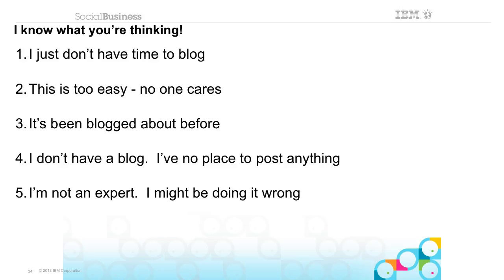Number two — this is too easy, no one cares. If it took you five minutes to figure something out, it's going to take me ten minutes. Share that information, help somebody. There is nothing that is too easy. Number three — it's been blogged about before. That doesn't mean you can't blog about it or do a show on it. The more blogs there are, the more postings about a topic, the better chances someone will actually find it and learn from it. Blog about it again — link back to the original source if you like, but don't be afraid to redo it in your own voice.